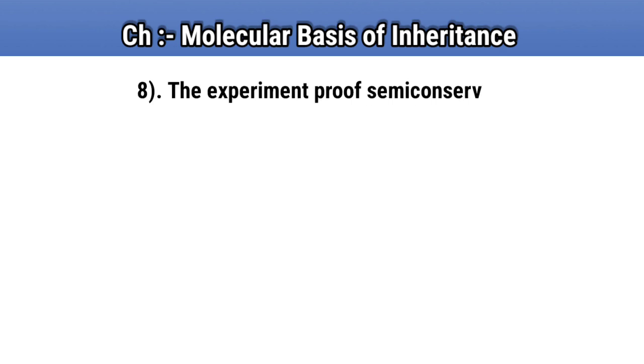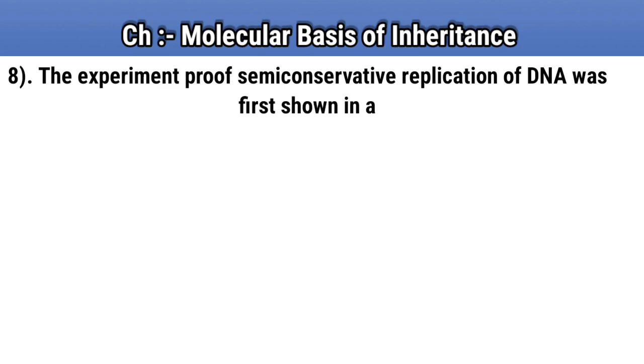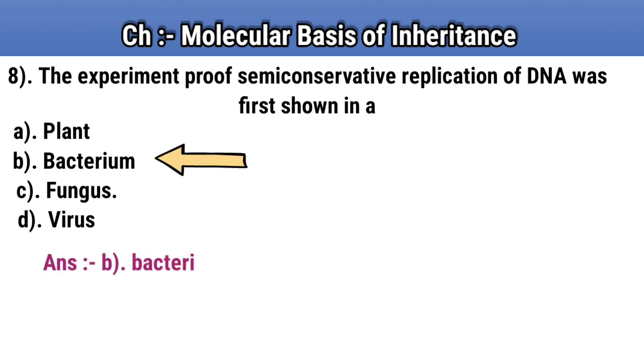Question number 8. The experimental proof of semi-conservative replication of DNA was first shown in. Option A: plants. Option B: bacterium. Option C: fungus. Option D: virus. Answer B: bacterium.